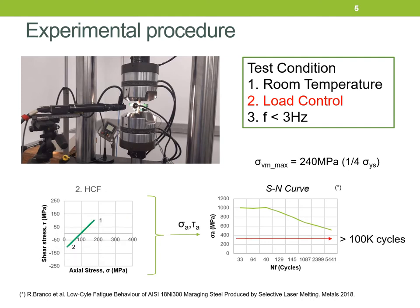For the high cycle fatigue regime, the stress values give a maximum equivalent von Mises stress around a quarter of the yield stress of the material. We expect the fatigue life for this loading path to be around 100,000 cycles.